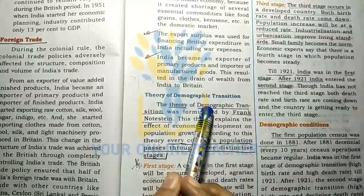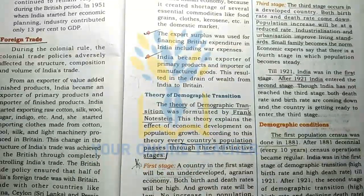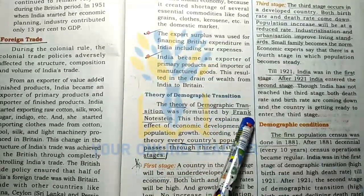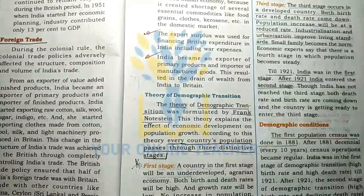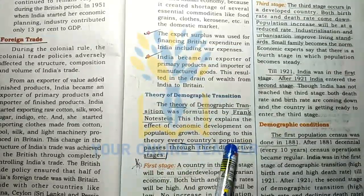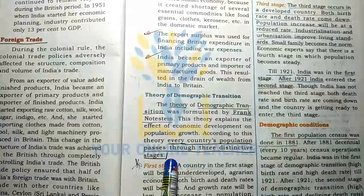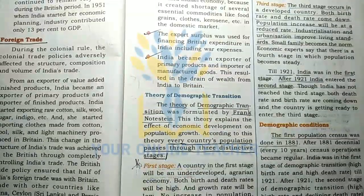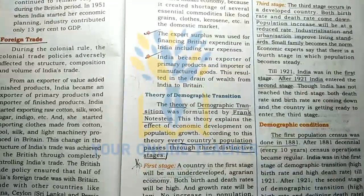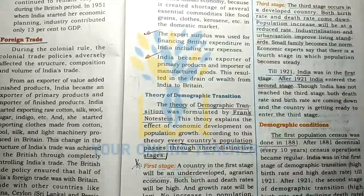Theory of Demographic Transition: this theory is formulated by Frank Notestein. Every country's population passes through three distinct stages.